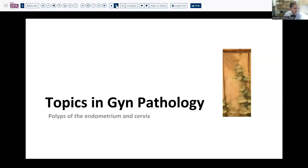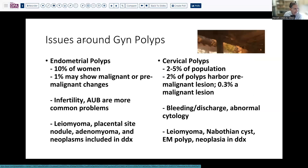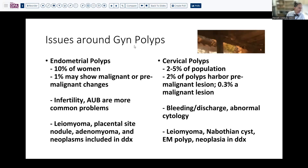This is a fairly common problem. For endometrial polyps, it's estimated that up to 10% of women may have them at some point during their lives, usually in the premenopausal age group, but oftentimes in the postmenopausal period as well. Cervical polyps are a little less common, maybe 2% to 5%, but a higher percentage — about 2% of those removed — may harbor some premalignant lesion. When multiplied across the population, you're very likely to encounter one of these malignant diseases in daily practice.